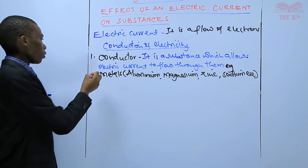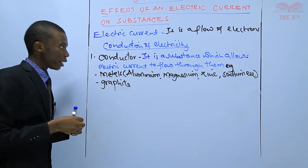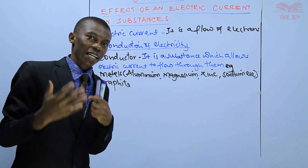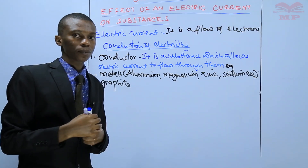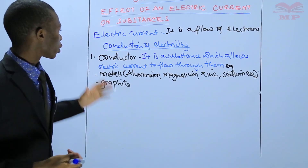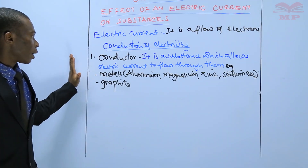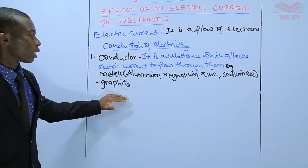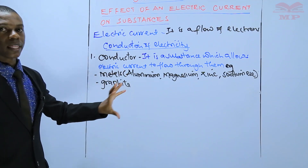Apart from metals, you also have graphite. So generally, metals and graphite conduct electricity. Conducting electricity means that they allow the flow of electrons or electric current to flow through them. All metals allow electric current to flow through them, and graphite — which is a non-metal — also allows electric current to flow through it. Later we will be discussing why these two substances are able to allow electric current to flow through them.